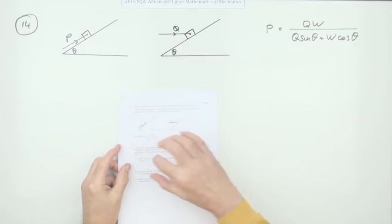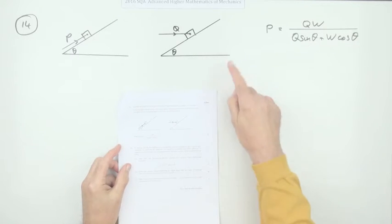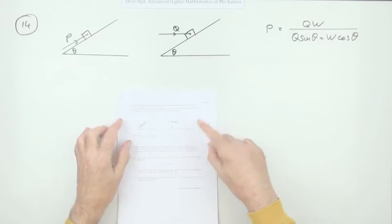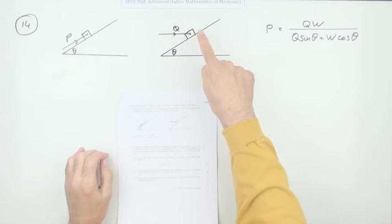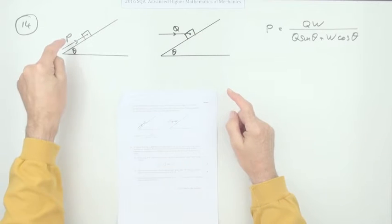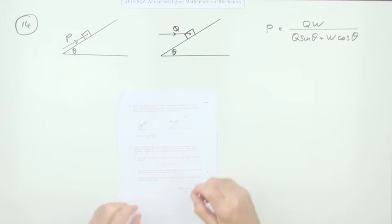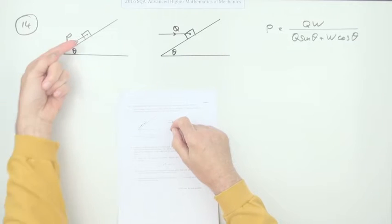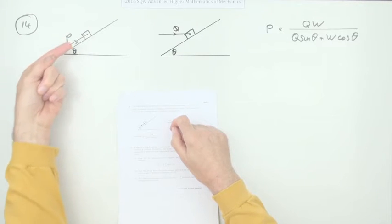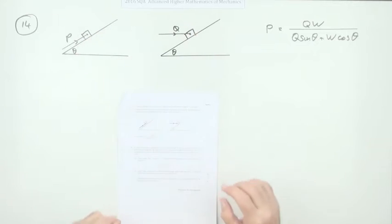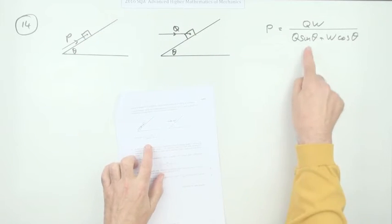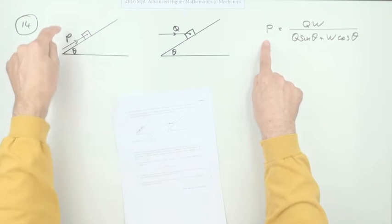Number 14 from the 2016 Advanced Higher Mathematics Mechanics exam. Here we have two situations with a block sliding down a plane, or rather just being held at the point of sliding. The first one by holding it with a force parallel to the plane, and the second one by holding a force which is horizontal. You have to show this result, the connection between force P and force Q.